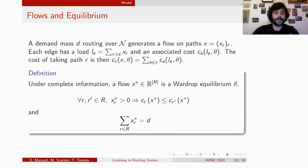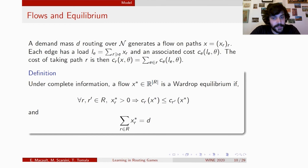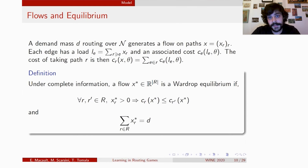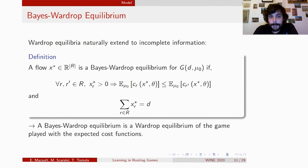As a solution concept under complete information, we consider Wardrop equilibria. A flow on the graph is a Wardrop equilibrium if every path that receives positive mass is a cost minimizer, and the sum of flows over all paths equals the original demand. These solution concepts transfer smoothly to incomplete information, giving what we call the Bayesian Wardrop equilibrium — simply the Wardrop equilibrium for the game played with expected cost functions under a given belief, so every path with positive flow is an expected cost minimizer.